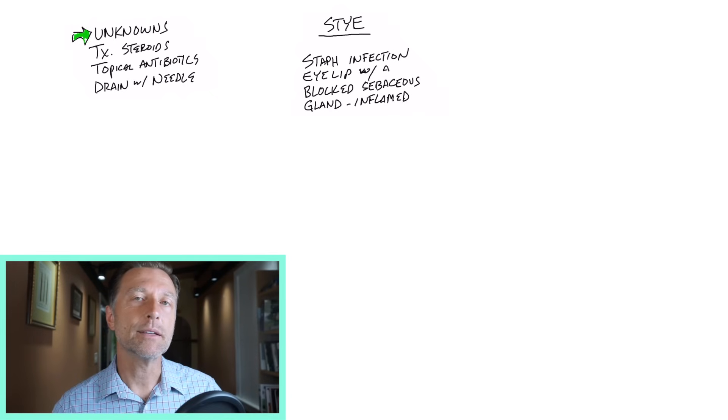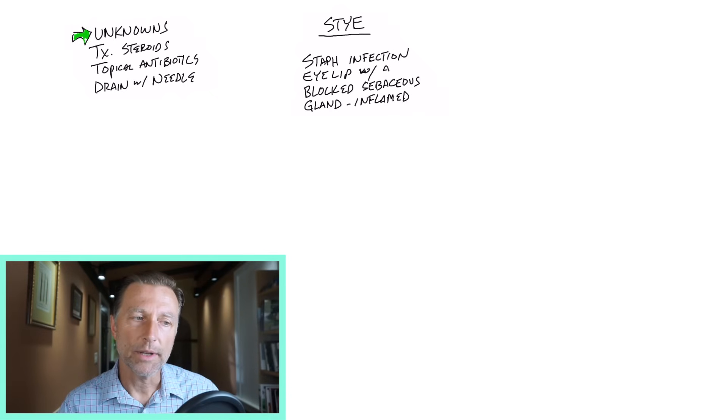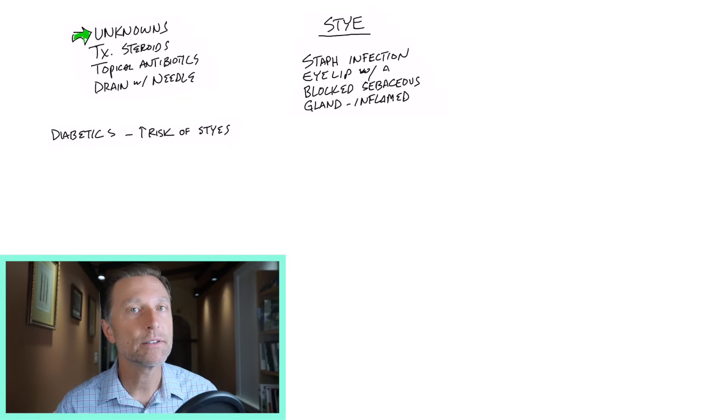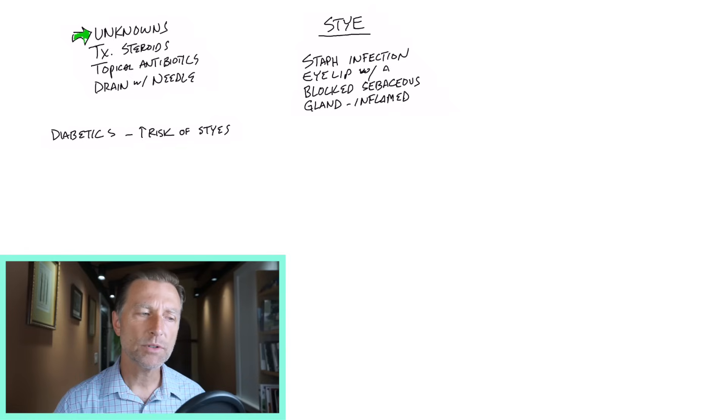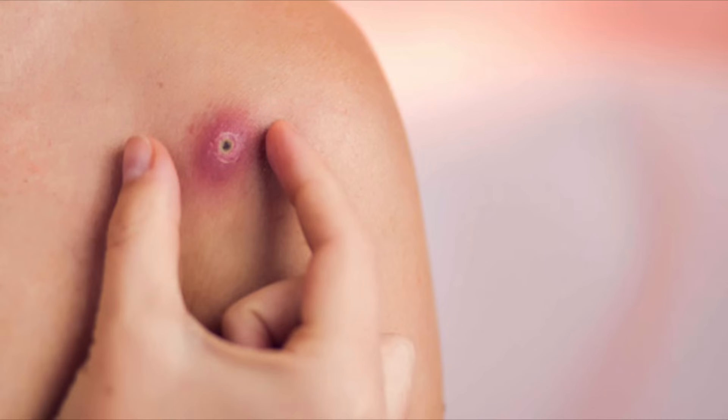One of the things that we know is that diabetics have a much higher incidence of styes. They also have a much higher incidence of staph infections, as well as cystic acne, which is similar to this stye problem, but on the face, not on the eyelid. It's also interesting that there's a much higher incidence of boils and cysts with diabetics as well.